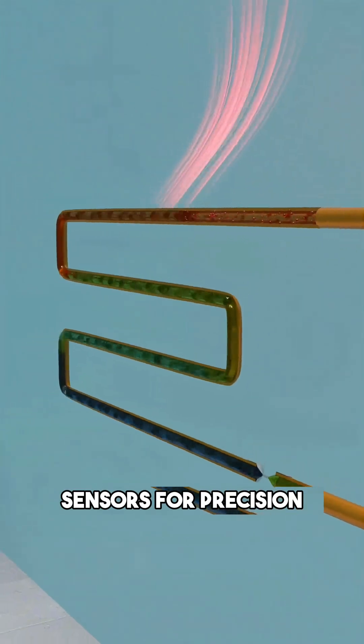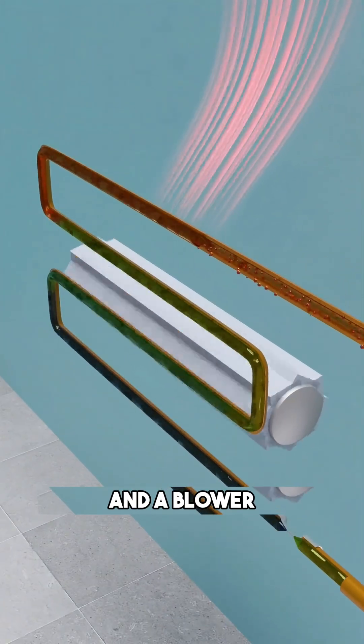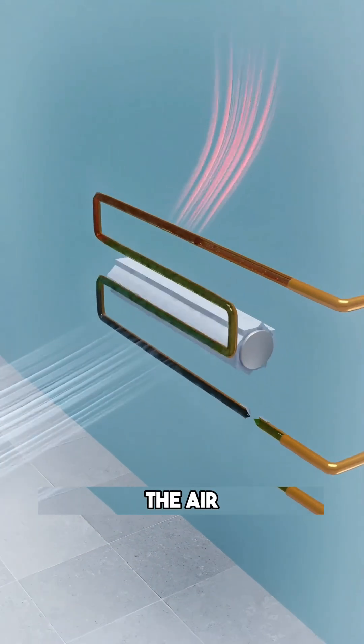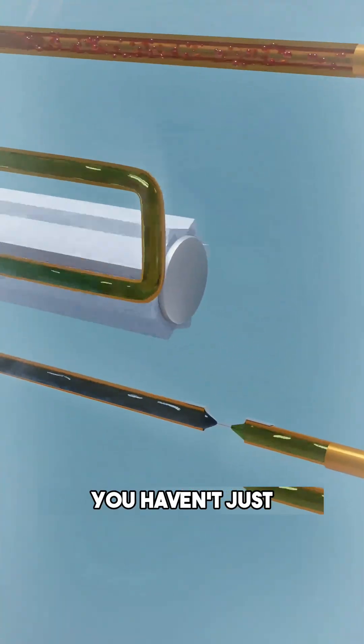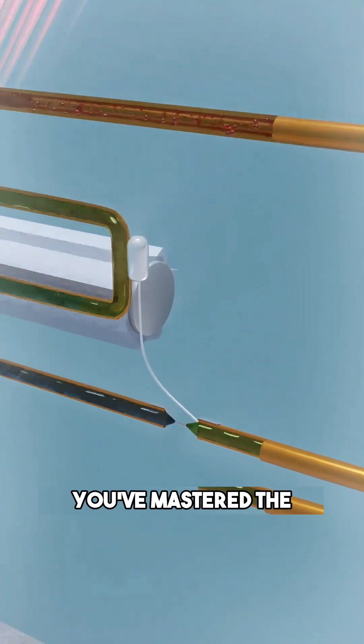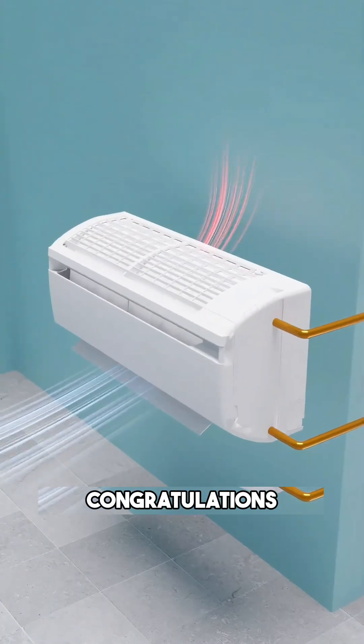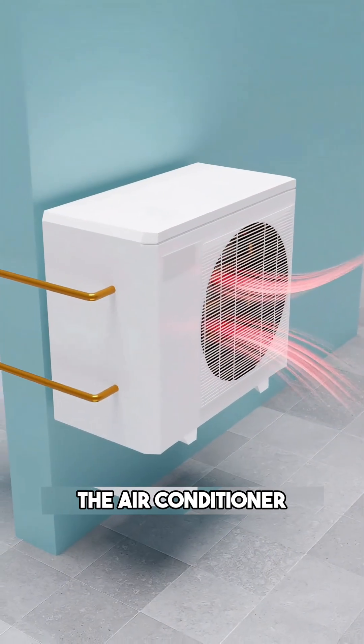Add a few sensors for precision and a blower fan to distribute the air. And you've done it. You haven't just beat the heat. You've mastered the laws of thermodynamics. Congratulations. You've just invented the air conditioner.